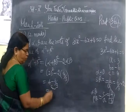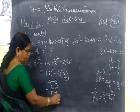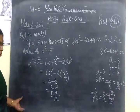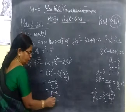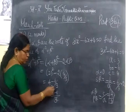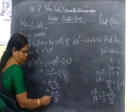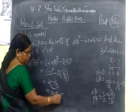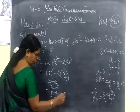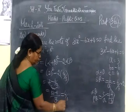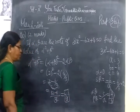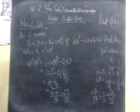Just cross multiply. 4 into 3 equals 12, then minus 8. So, the LCM is 3. 12 minus 8 equals 4. This is equal to 4 by 3. So, the value of alpha square plus beta square is equal to 4 by 3.